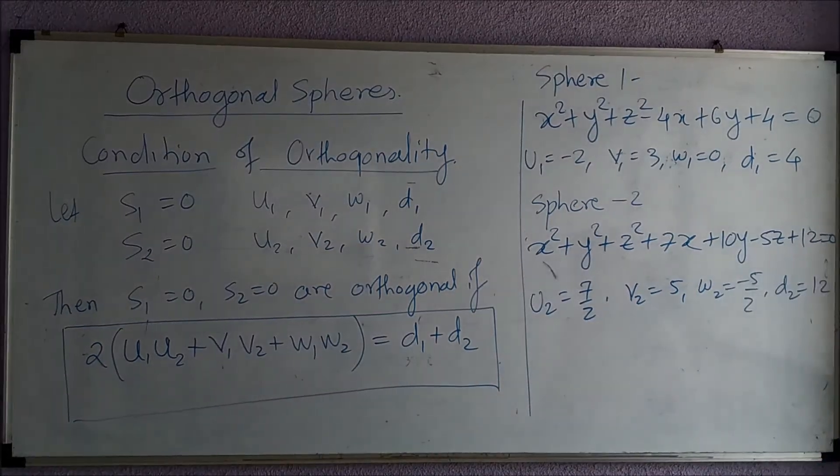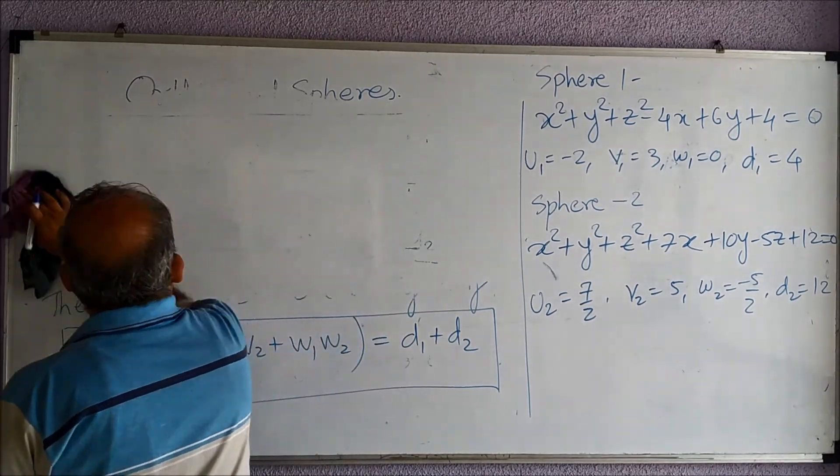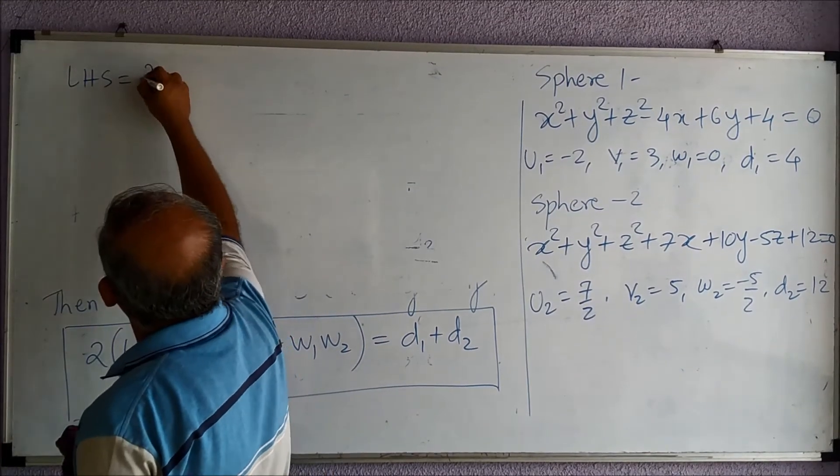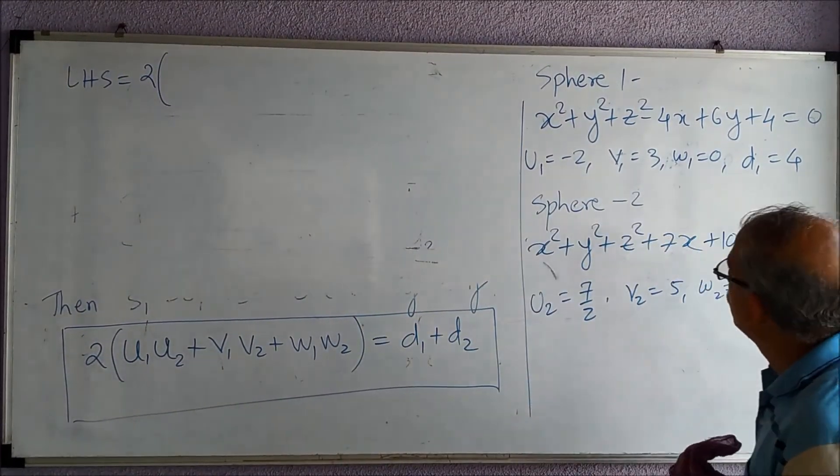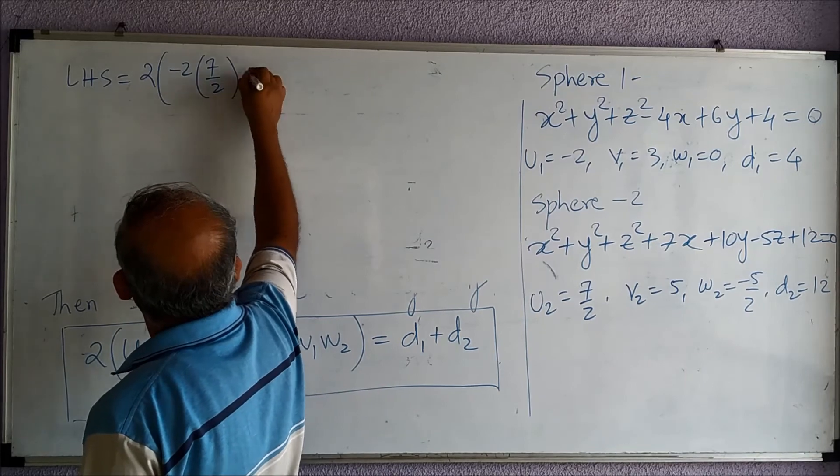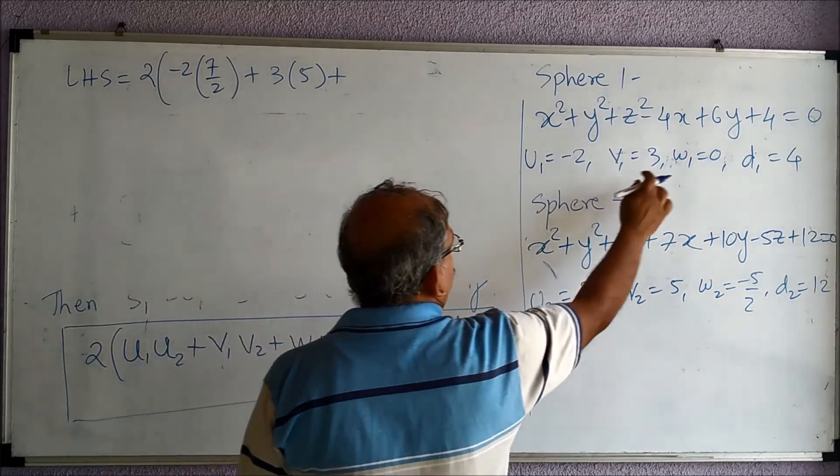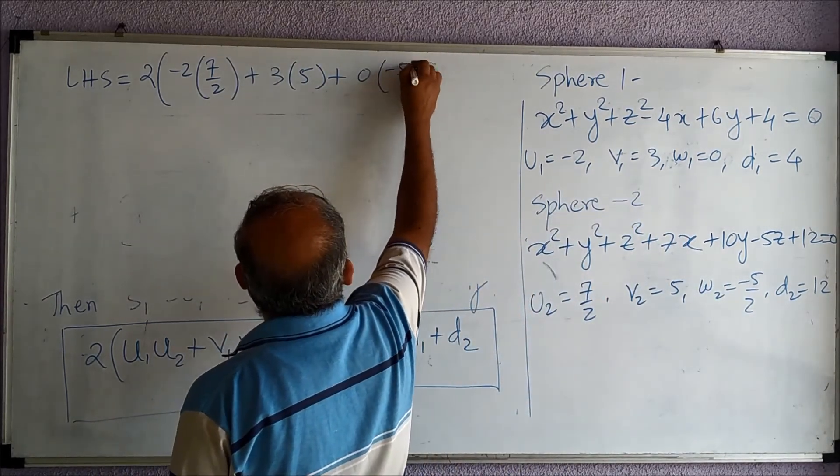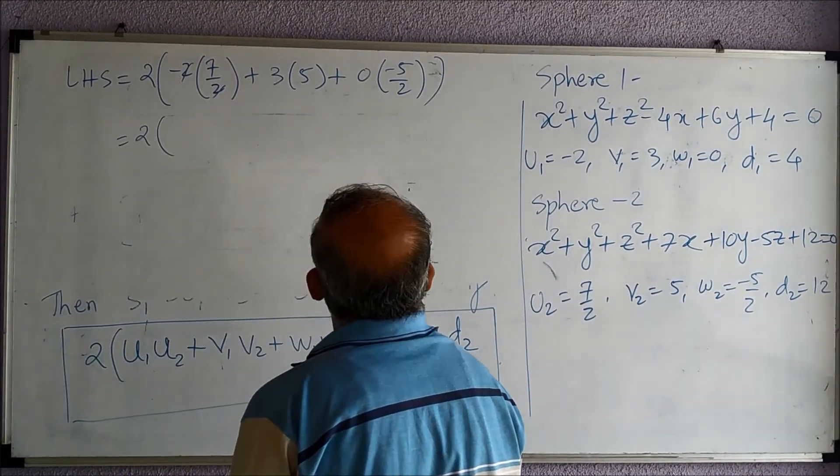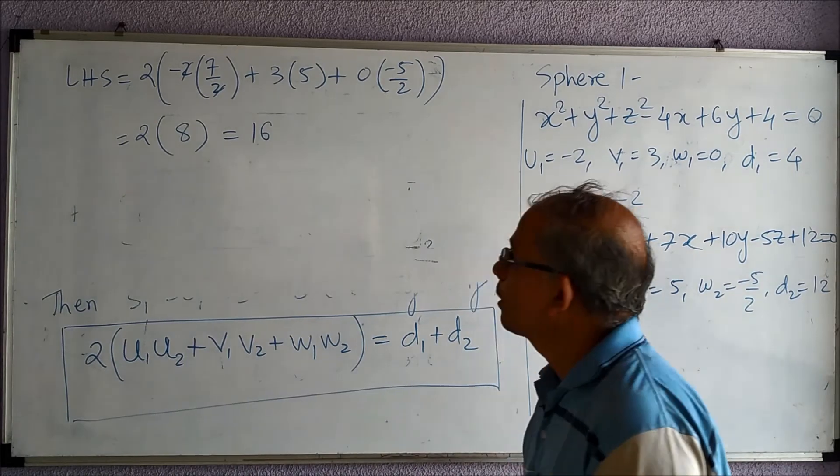Let us see whether this condition is satisfied. The LHS of this condition is: LHS = 2 times (-2 · 7/2 + 3 · 5 + 0 · (-5/2)). This will get cancelled, so 2 times (15 - 7), so 2 times 8, which is 16.